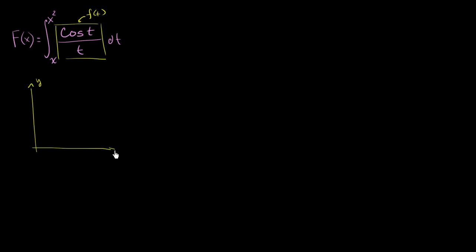This is my t-axis. And let's say that this right over here is y is equal to f of t. I'm drawing it generally. I don't know what this exactly looks like. And we're going to talk about the interval between x and x squared. So if we're going to talk about the interval between x, which is right over here, it's the lower bound. So x and x squared.